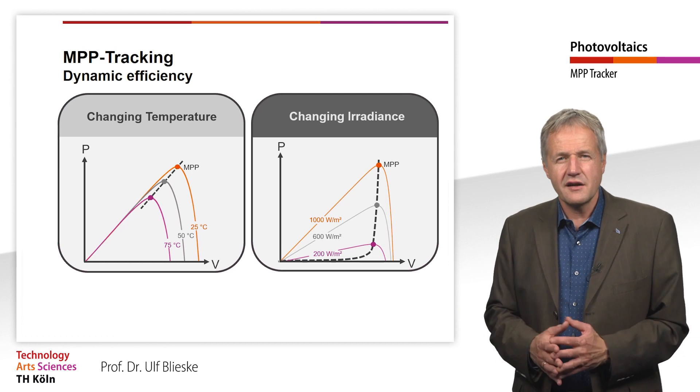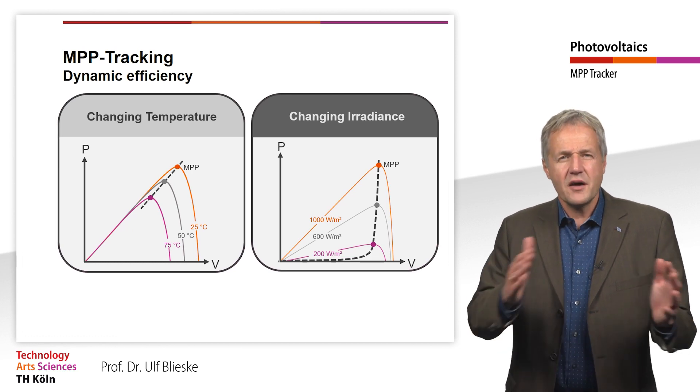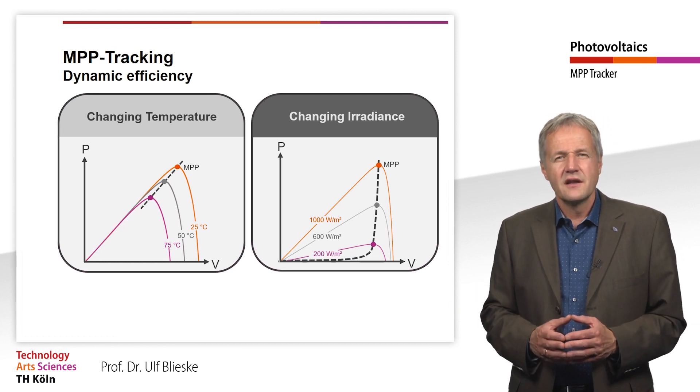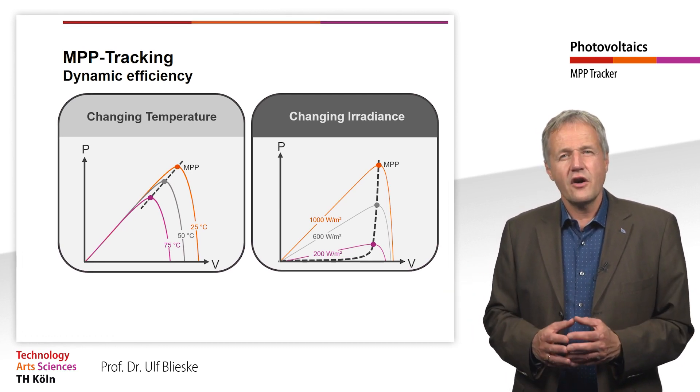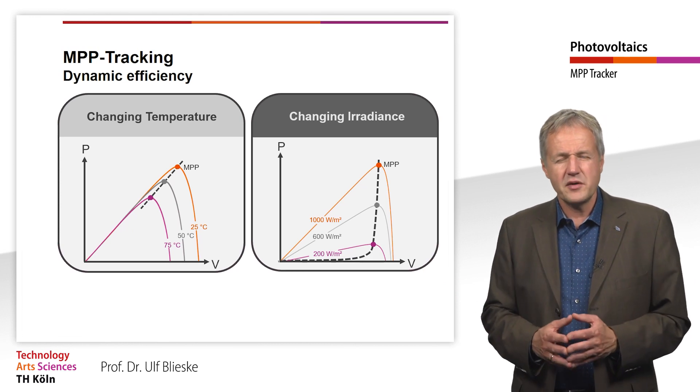However, with rapidly changing cloud cover, there are sudden jumps in the irradiation. It is precisely these sudden and rapid changes in the characteristic curves that are problematic for the MPP controller.